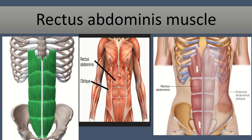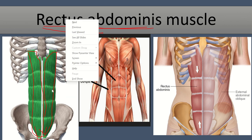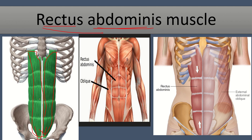We can see the rectus abdominis muscle. 'Rectus' means straight and 'abdominis' means abdomen, so rectus abdominis means a straight muscle of the abdomen. We can see here it is a straight muscle. This is one of the straight muscles called the rectus abdominis muscle. We can see the muscle fiber in this picture and in the third picture as well — this is the rectus abdominis muscle.